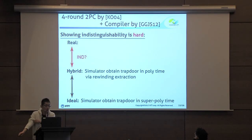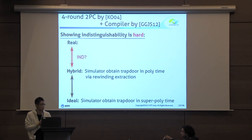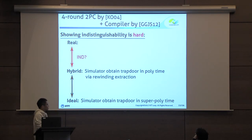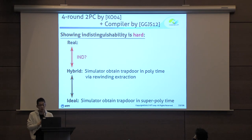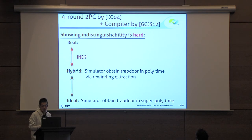However, even though we can easily obtain the super-polynomial time simulator, we cannot show the indistinguishability in a straightforward way. In particular, we encounter a problem when showing the indistinguishability between the real world and the hybrid, so let me explain what the difficulty is.